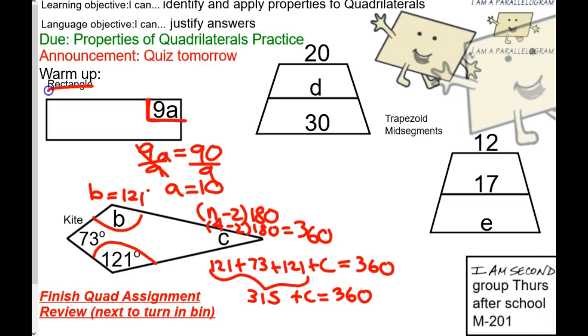And then, to get rid of that 315, we subtract. So, C is going to be 45 degrees.